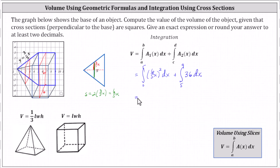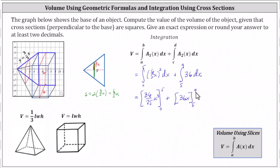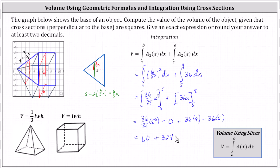Now we determine the antiderivatives. The integrand function is 36 over 25 times x squared, and the antiderivative is 36 over 25 times x cubed over three, which is 36 over 75 times x cubed. Plus, the integral of 36 with respect to x is simply 36x. Evaluating: 36 over 75 times five cubed minus zero, plus 36 times nine minus 36 times five gives us 60 plus 324 minus 180, which equals 204 cubic units.